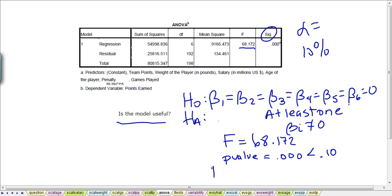So we would reject our null hypothesis that tells us at least one of these coefficient values is not zero. And that means that yes, since we rejected the null, this model is useful. At least one of these coefficients is not zero.